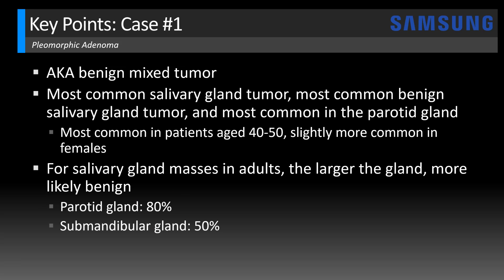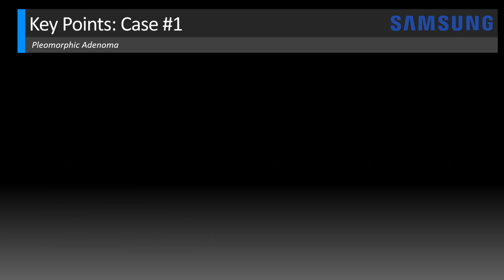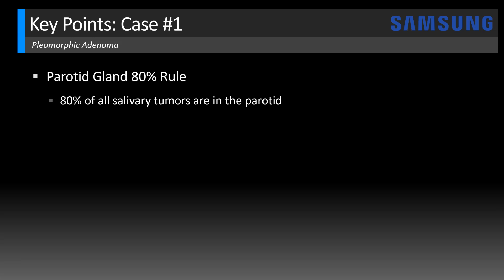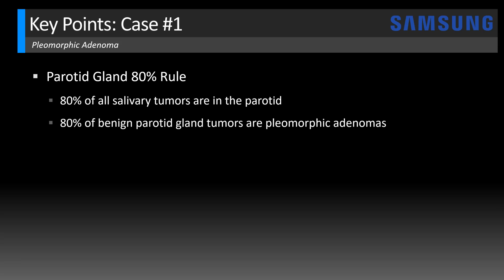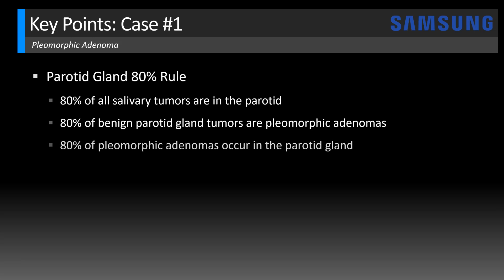The submandibular gland, which is smaller, has only about 50% benign tumors. The sublingual glands are much more likely to be malignant, with only 20% being benign. Along those lines, there's a parotid gland 80% rule: about 80% of all salivary tumors are located in the parotid gland, 80% of benign parotid gland tumors are pleomorphic adenomas, and 80% of pleomorphic adenomas occur in the parotid gland as opposed to other salivary glands like the submandibular gland.